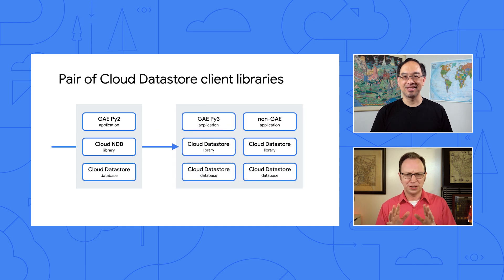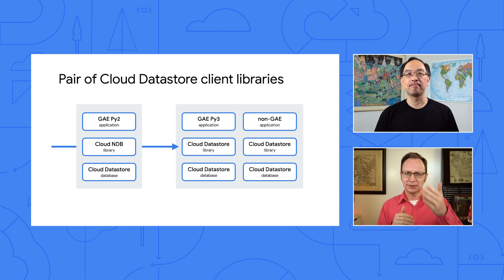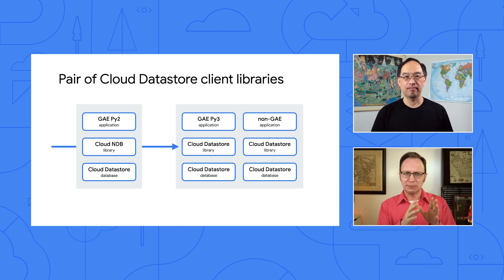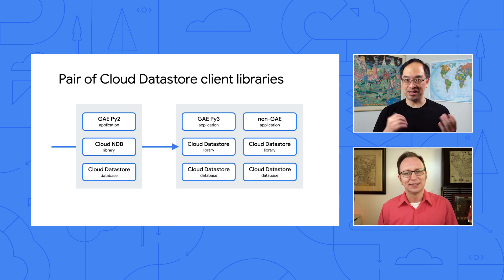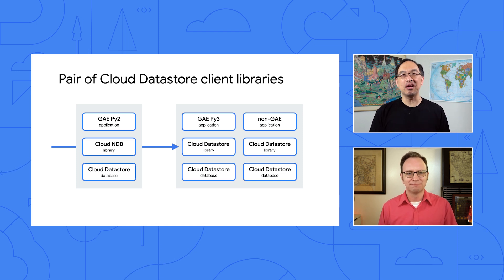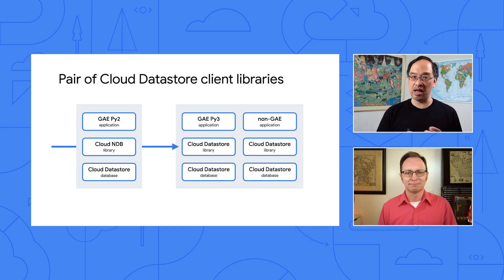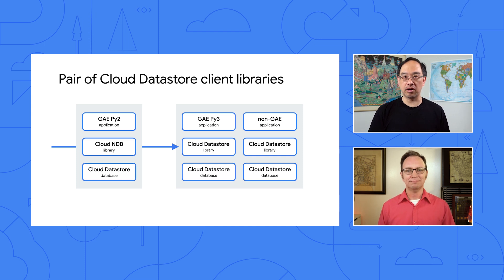I think I understand now. You're saying that there are two client libraries to access Cloud Datastore — one for long-time Python App Engine users who prefer the NDB style, while the other is for those completely new to Cloud Datastore. Is that right? Yes, essentially that's right. Although Cloud NDB can be used with the next generation and Python 3 App Engine apps as well as non-App Engine apps, meaning Python developers have two options for accessing Cloud Datastore, depending on their preference. Now the real question is why you would consider migrating.